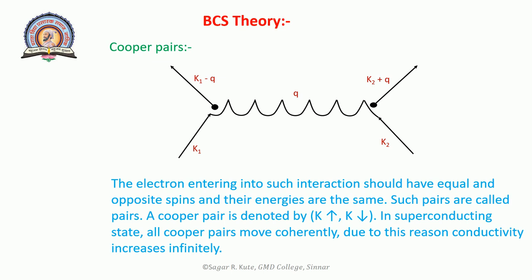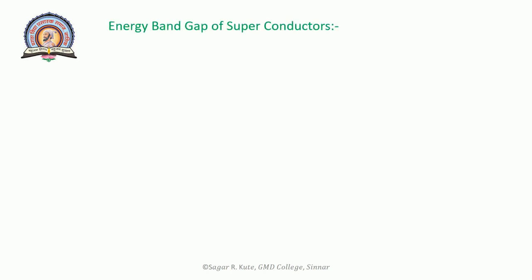Such pairs are called Cooper pairs. A Cooper pair is denoted K arrow. In the superconducting state, all Cooper pairs move coherently, and due to this, conductivity increases infinitely. Now consider the energy band diagram of a superconductor. For all temperatures in the vicinity of absolute zero, a forbidden energy gap is observed just above the Fermi level energy.